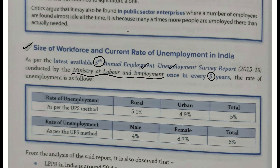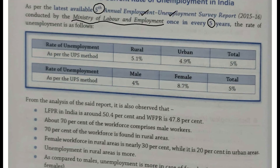Is report ne unemployment, berozgaari ke aankde kya hain hamare saamne dekhte hain. Toh uske baad yeh humein bolta hai ki rate of unemployment as per the UPS method. Yahan par rural aur urban ke basis par aur male aur female ke basis par method hum log UPS use kar rahe hain — jo ki humne previous lecture mein dekha tha.